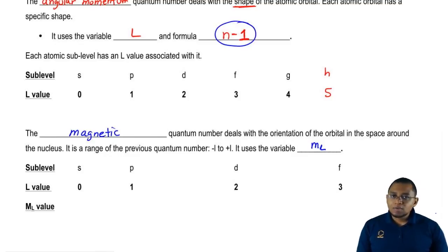If L is zero, is there such a thing as positive and negative zero? There isn't. There is no such thing as positive zero or negative zero. Zero is just zero, so m sub L would be zero as well.